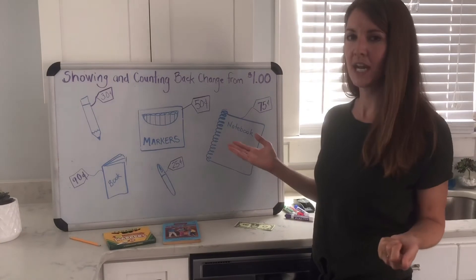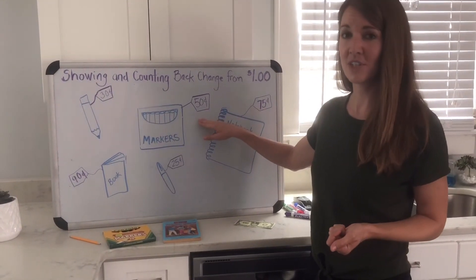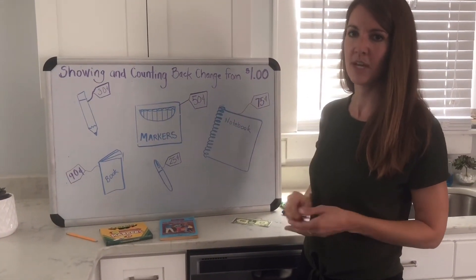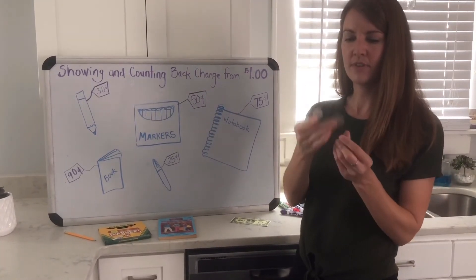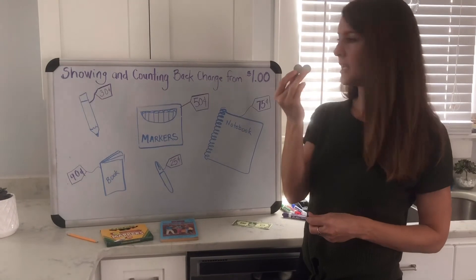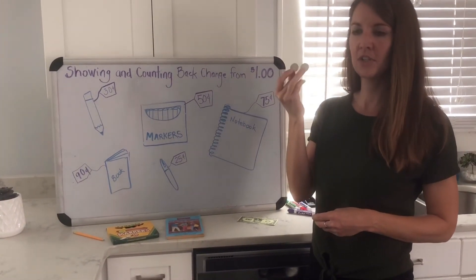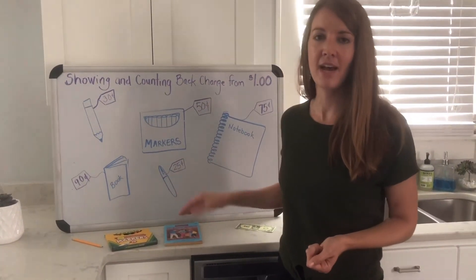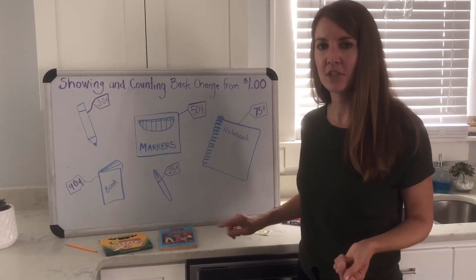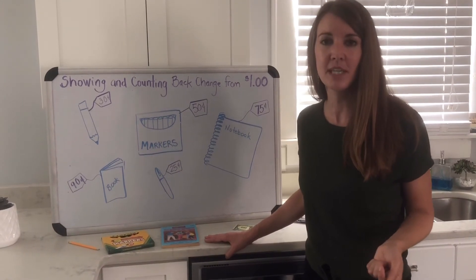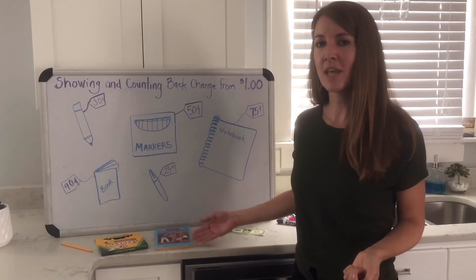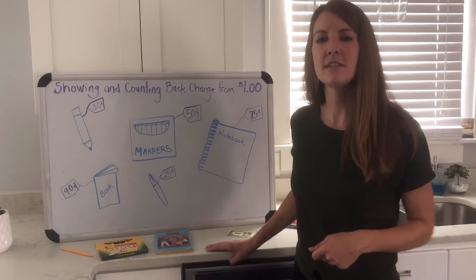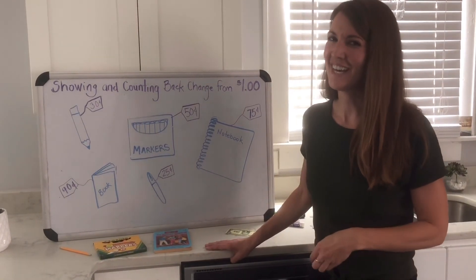For some items like these markers, you could use either method — count up by dimes since it ends in zero, or count up by quarters since 50 plus 50 is a dollar. If moms and dads have dimes or quarters at home, you can practice counting your own piles of change. Play store with a sibling or parent — have them give you too much money and practice counting back up to the dollar to find the change. That's your math lesson for today!